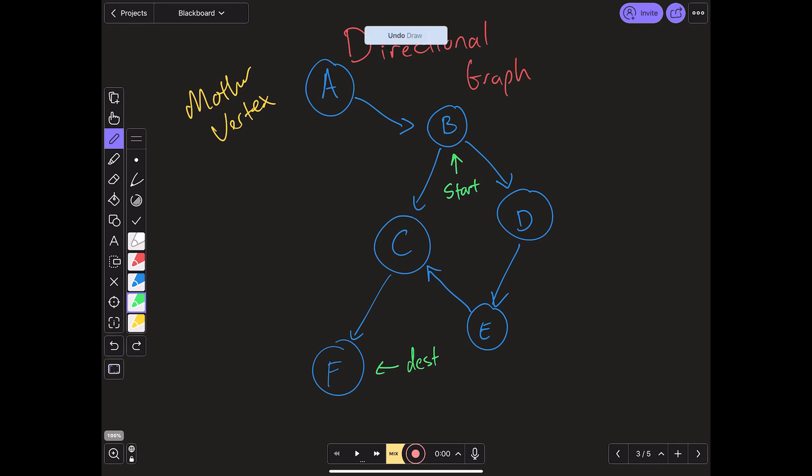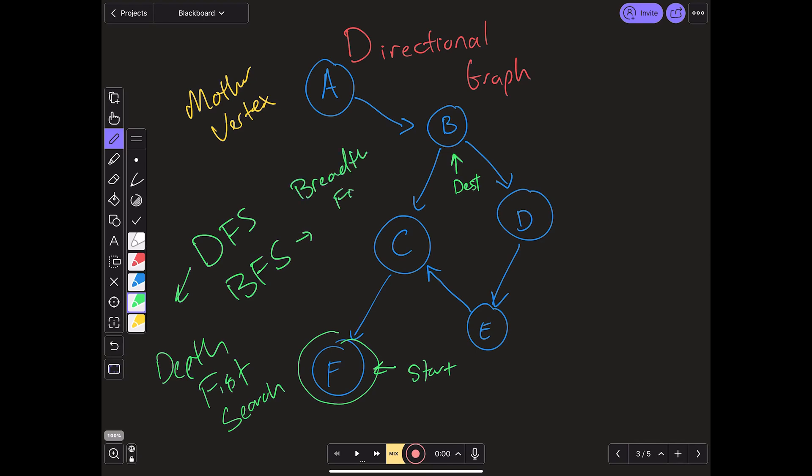However, if we sort of flip it on its head and we make instead F our starting node and B our destination, well there's no way for F to get back to B, therefore it is impossible to do that. And there are two algorithms that are really good at finding stuff like this out. They are known as DFS and BFS. DFS stands for depth first search. Now these two algorithms are a bit out of the scope for this video, but in our next video I'm going to be walking through how to do both of them.